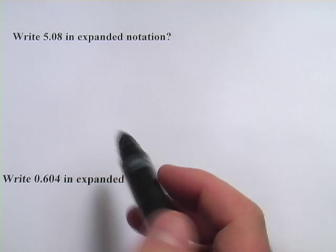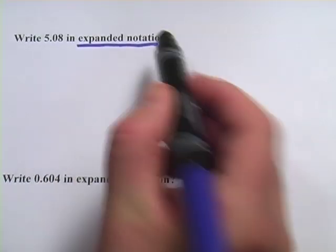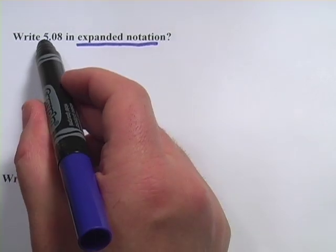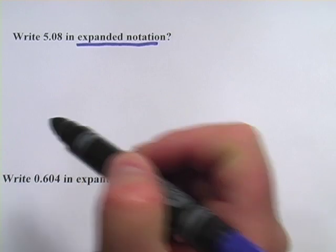These problems are about something called expanded notation of decimals. And to write something in expanded notation, you basically write each of the numbers times its place value.